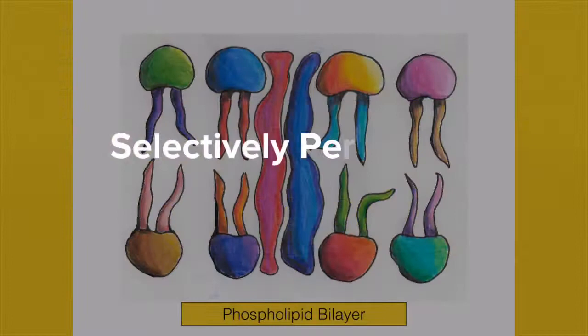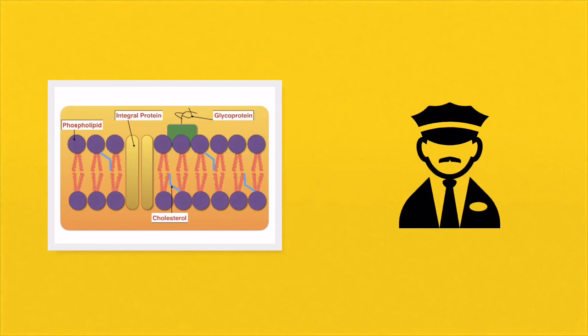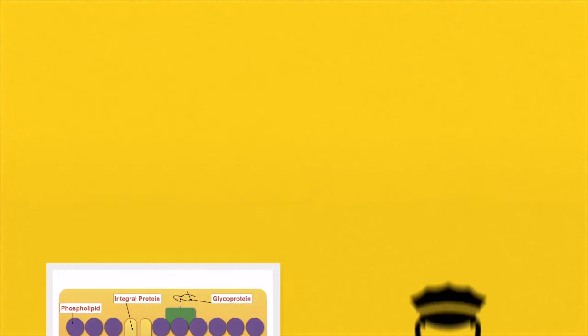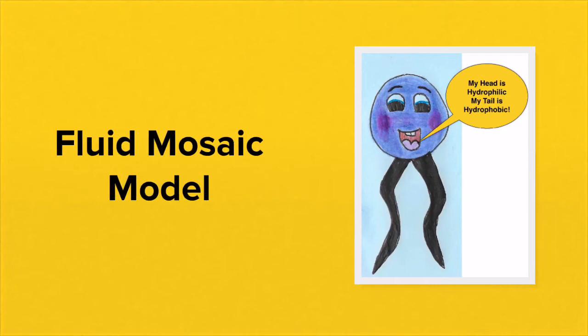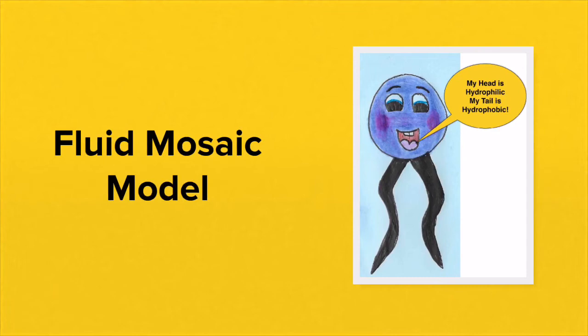The cell membrane protects the integrity of the cell by acting as a selectively permeable barrier — controlling what is allowed into and out of the cell. Oxygen and carbon dioxide have free movement through the phospholipid bilayer, as does water, though water moves a little more slowly. Cell membranes are constantly moving and not rigid; the model used to describe this structure is known as the fluid mosaic model.